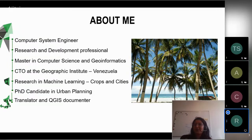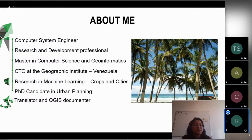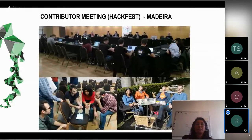About me: I was born in a beautiful, warm and tropical country called Venezuela, located in South America. I'm a computer systems engineer by training, and my research interests are machine learning algorithms for image classification and spatial planning. Five years ago I moved to the Netherlands where I'm doing my PhD research, and it was this research that took me to attend a couple of QGIS events, where I became a translator and later a QGIS documenter. My first hackfest was in Madeira.